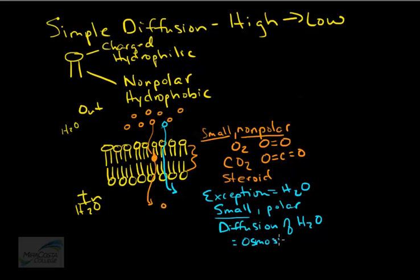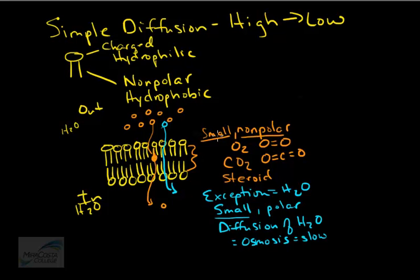Osmosis through the bilayer is relatively slow. Cells have a way to speed up the movement of water through the membrane when needed. Simple diffusion is the transport of materials capable of dissolving into the cell membrane, moving down their concentration gradients, passing from one side to another.